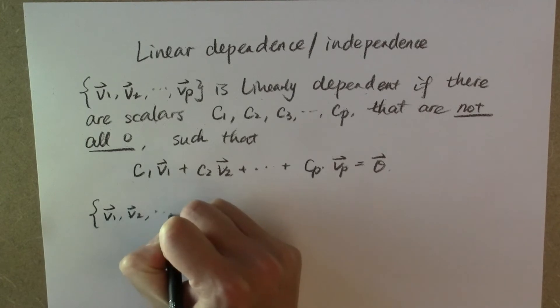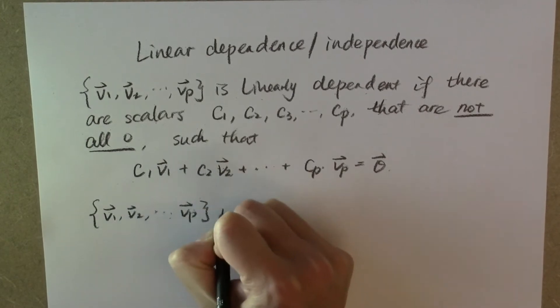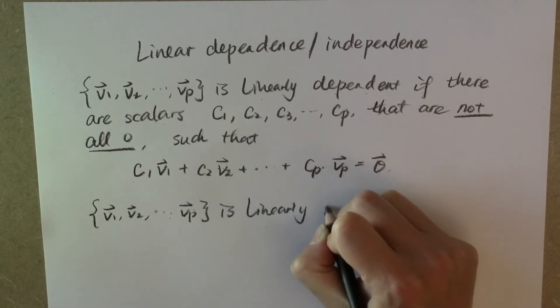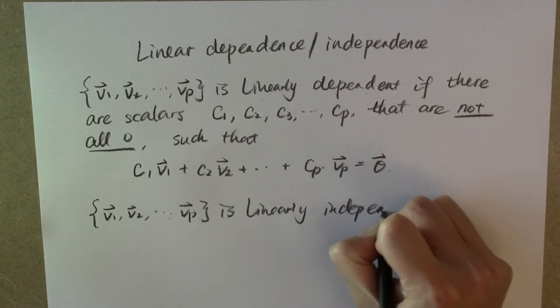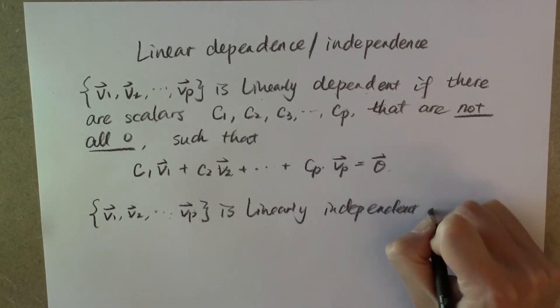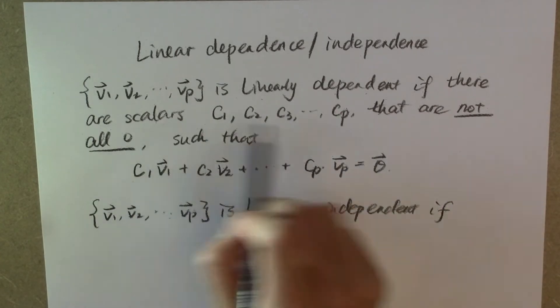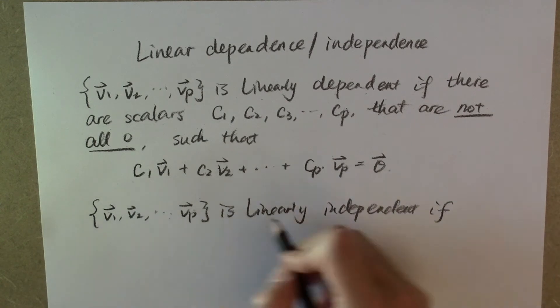And this set of vectors is said to be linearly independent if this is not true.